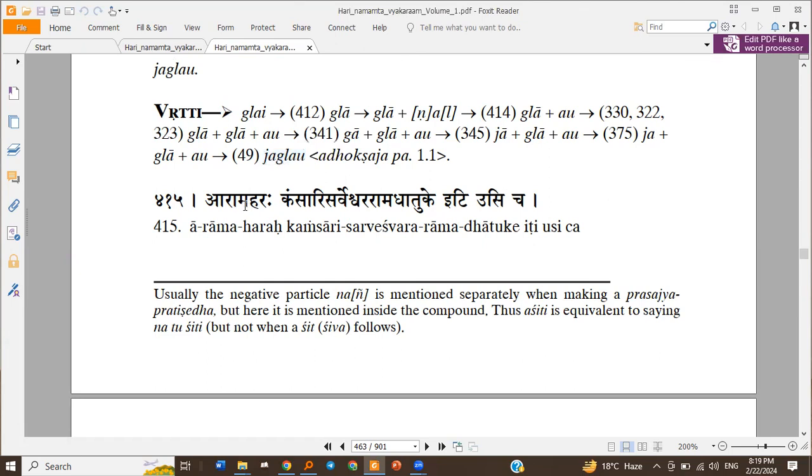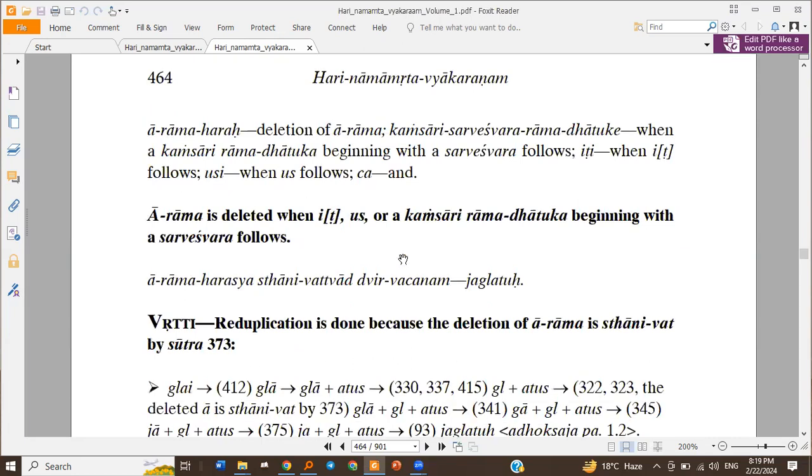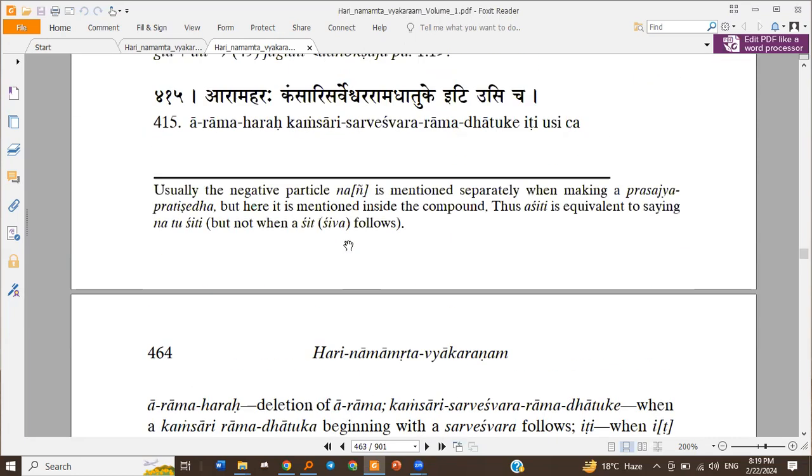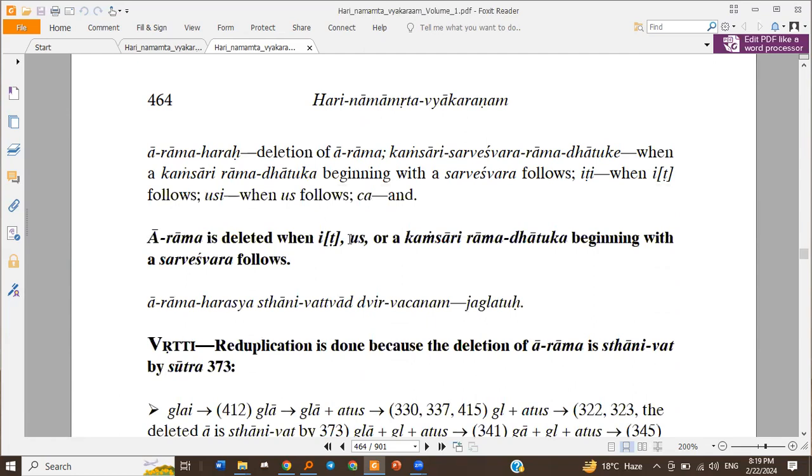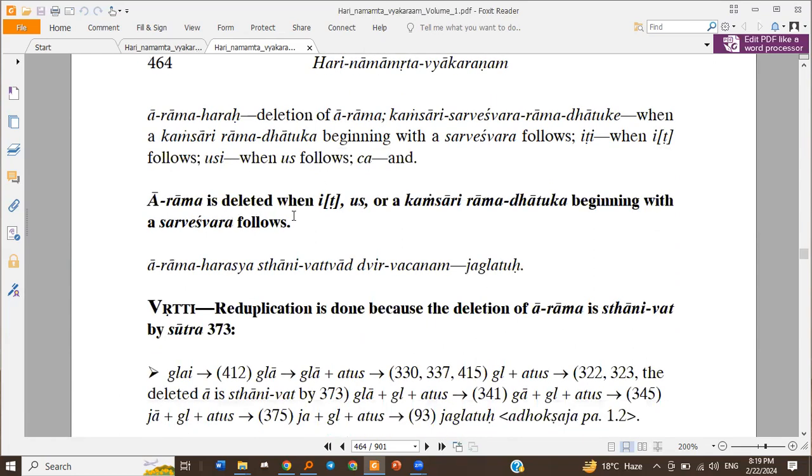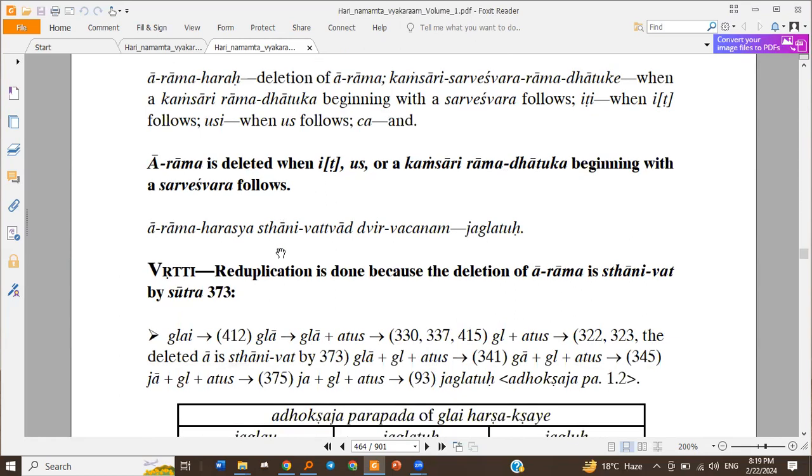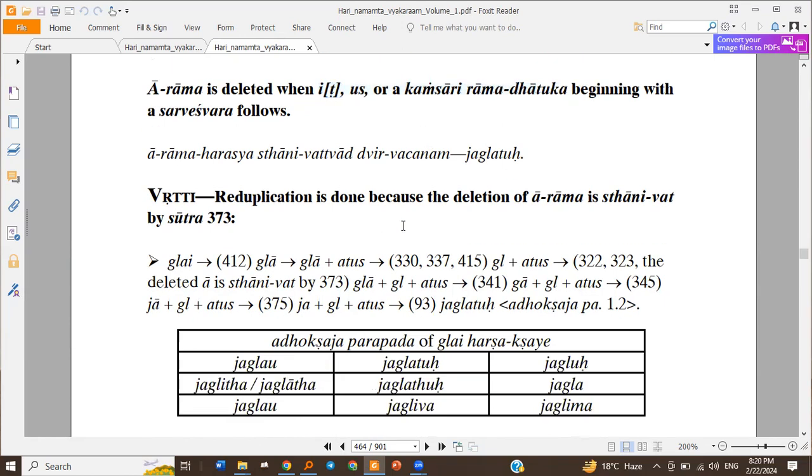Hare Krishna. Kansari Sarveshwara Rama Dhatu Ke Iti Usi Cha. The sutra says Arama Haraha Kansari Sarveshwara Rama Dhatu Ke Iti Usi Cha - the Arama is deleted when It Us or a Kansari Ram Dhatu Ke beginning with the Sarveshwara follows. So these are the Parani Mithas. If either of them follow, Arama gets deleted, so Glahi becomes Gla.